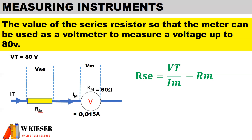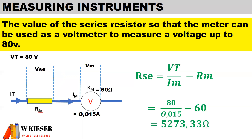Using the formula from the formula sheet, the value of the series resistor is: total voltage divided by the current flow through the meter, minus the resistance of the meter. That is 80 volts divided by 0.015 amps, minus 60 ohms. Therefore, to measure voltage we place a resistor of 5273.33 ohms in series with the meter.